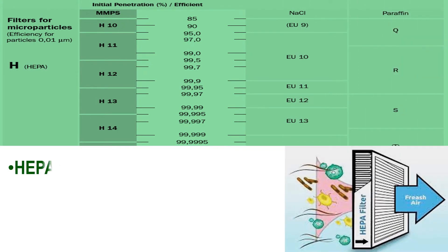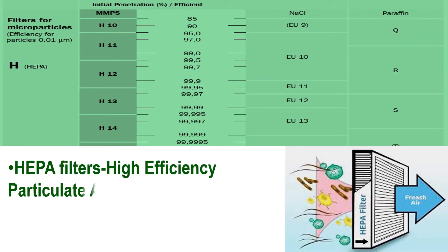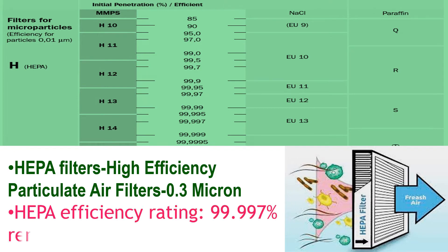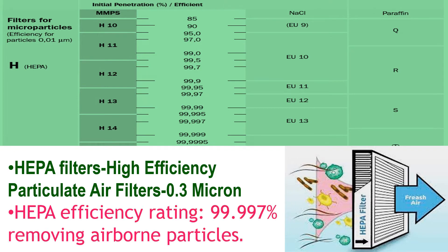HEPA filters — High Efficiency Particulate Air filters — can capture at least 99.97% of particles with a diameter greater than or equal to 0.3 microns. They can filter out impurities and particles such as viruses, respirable dust, mite eggs and excretions, mold, dust, allergens, pollen, bacteria, dust mites, cigarette smoke, asbestos, various toxic dusts and aerosols, and dander and allergens from the fur of dogs or cats.